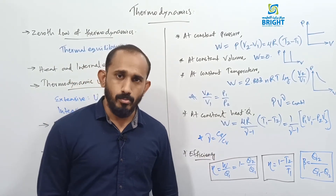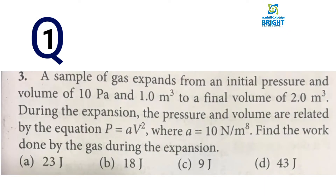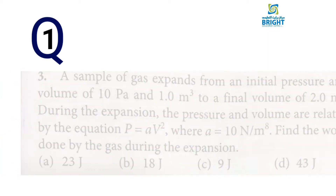Numerical example: A sample of gas expands from an initial pressure and volume of 10 Pa and 1 m³ to a final volume of 2 m³. During expansion, pressure and volume are related by P = aV², where a = 10 N/m⁸. Find the work done by the gas during the expansion.